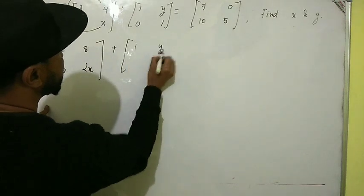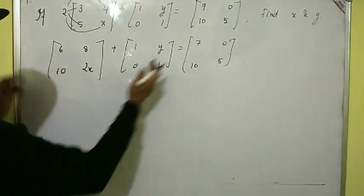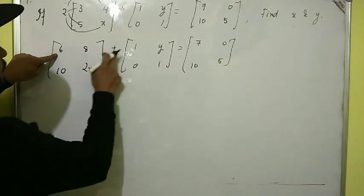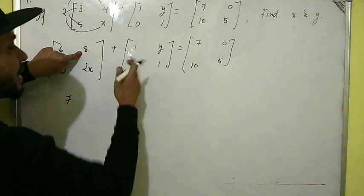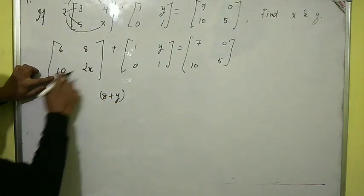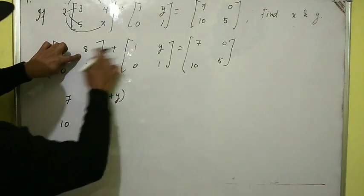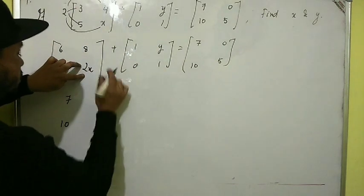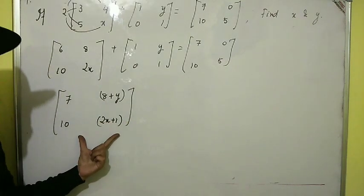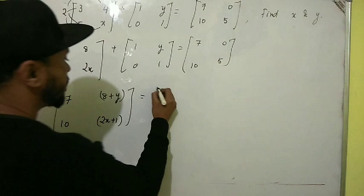The result is [6, 8, 10, 2x] plus [1, y, 0, 1], which equals [7, 10, 0, 5]. The orders are the same, so we can add: 6 plus 1 is 7; 8 plus y we write as 8+y; 10 plus 0 is 10; 2x plus 1 is 2x+1. Make sure to leave gaps when arranging elements in the matrix.